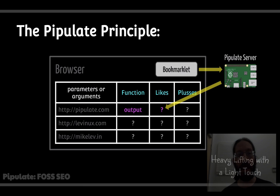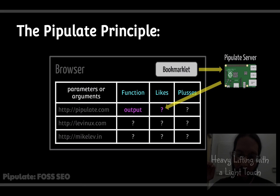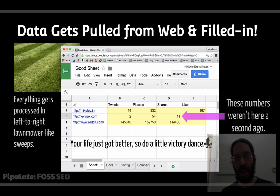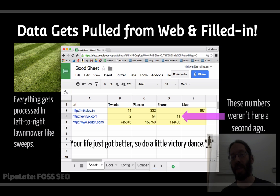It works like this: any column can contain the input parameters to a function; functions are the column titles of all the following columns. When Pipulate processes a row, it takes the parameter, feeds it into the function, and executes it on a server — which might be a Raspberry Pi in your house or a cloud server. It returns the value and plugs it into the spreadsheet. Data gets pulled from the web processing left to right, top to bottom — a lot like a lawnmower — and records the values.